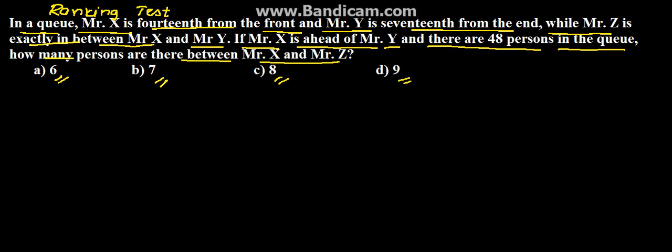To solve this problem, first let us see in what order they are. X is 14th from the front, which means X is to the left. Y is 17th from the end, which means Y is from the right. And Z is exactly between X and Y, so Z is in the middle. This is the order.